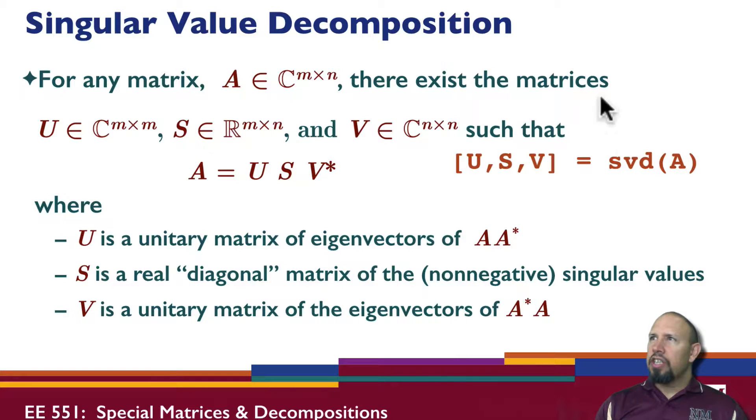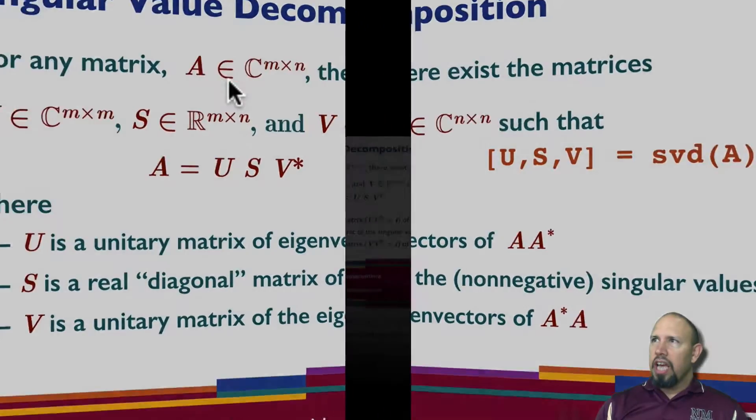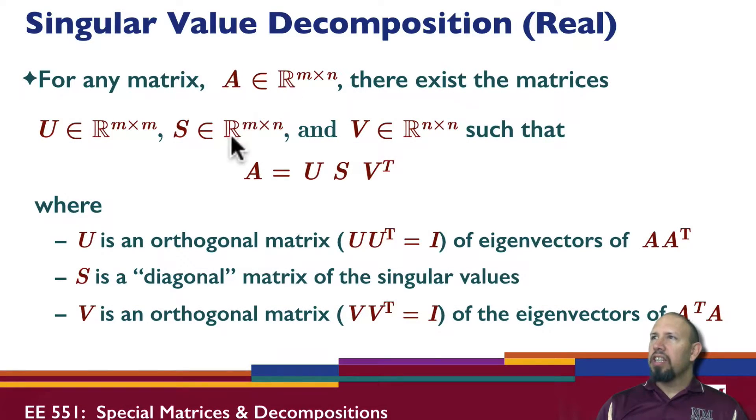So this is the situation in general when A is a complex matrix. If A is a real matrix, then we basically get the same kinds of things, but all of our matrices now are real. U, S, and V are all real. Actually, in both cases, S is a real matrix of non-negative values. It'll have all zeros and some non-negative values along the diagonal.